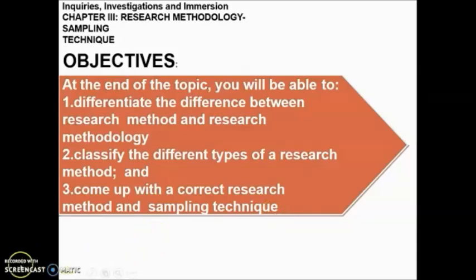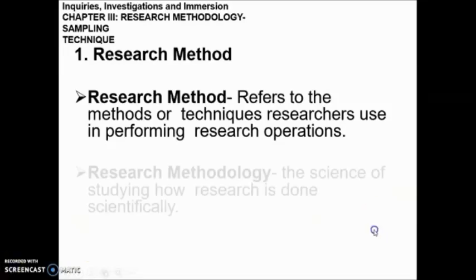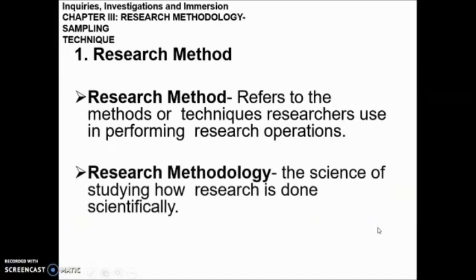To start with, let us discuss what is a research method. A research method refers to the methods or techniques researchers use in performing research operations, while research methodology is the science of studying how research is done scientifically. We can define research method as the technique we use in doing the research, while research methodology is the step-by-step process of how to do the research method that you chose to perform.